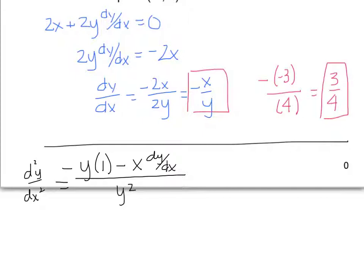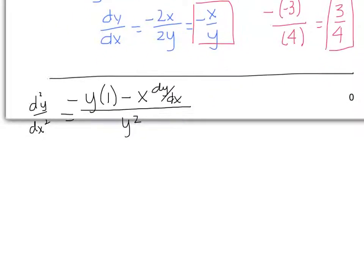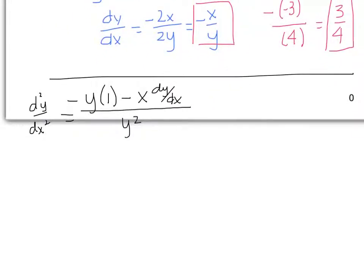The nice thing here is I don't have to isolate this dy/dx directly, because it would be very difficult to get it by itself and still evaluate it in terms of x and y at the coordinate point given. So I can continue to simplify, and note that we end up with y minus x times dy/dx. Since we found that dy/dx equals negative x divided by y, I can substitute that in.